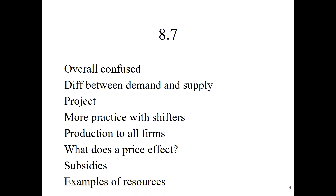Subsidies are government incentives for businesses to make more product. Like, they might tell farmers, 'We'll give you a dollar for every bushel of corn,' so that gives farmers an incentive to make more corn because the government's giving the dollar, which is like cutting their cost. Until we get to externalities, you can think subsidies shift supply to the right all the time. An example of resources: if we're talking about corn, the resource would be seed, farmers, people picking the corn, soil. For my shirt, it's cotton, workers, how to transport the shirts to the stores — all those would be resources.